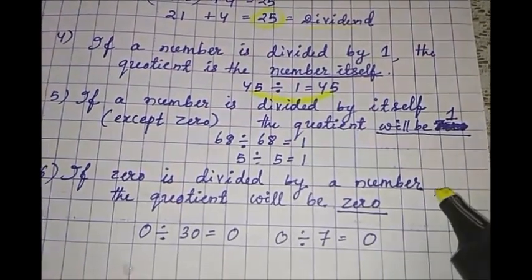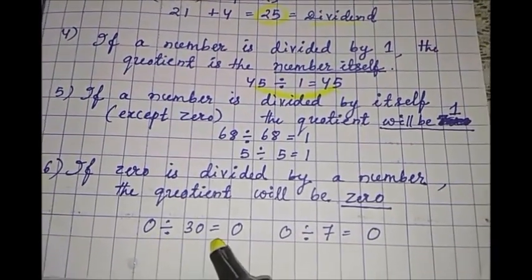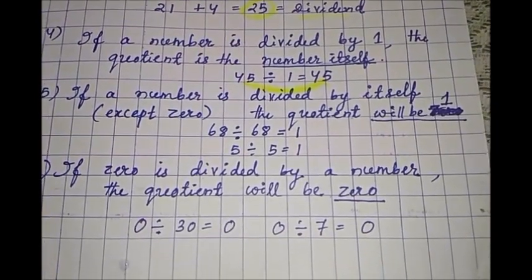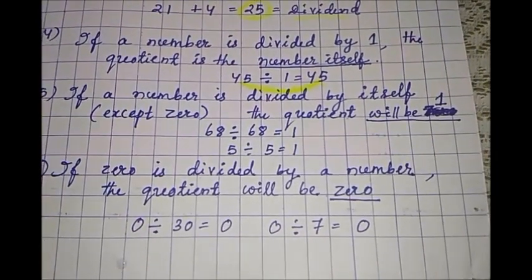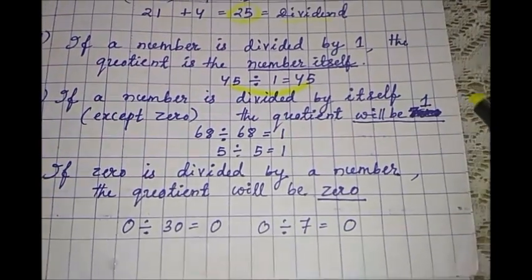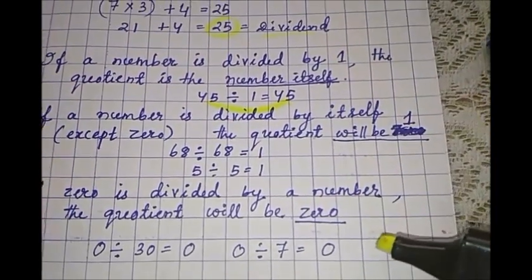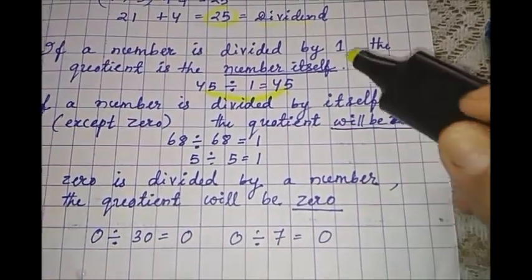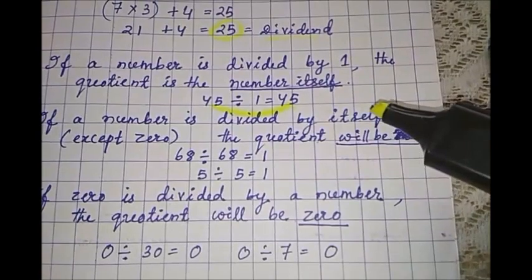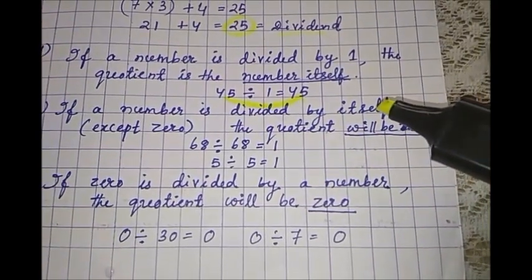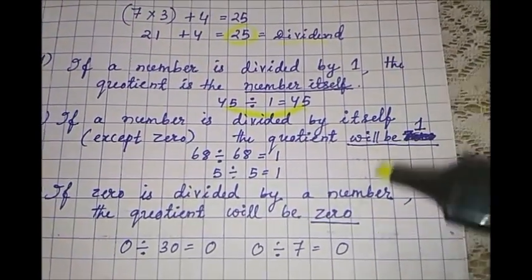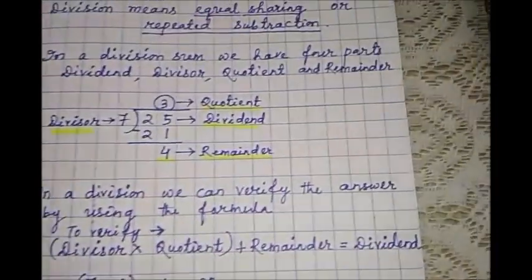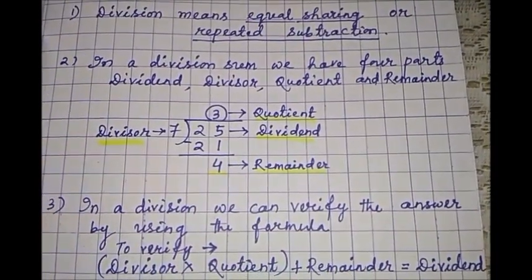Then, if 0 is divided by a number, see, 0 divided by 30 or 0 divided by 7. If 0 is divided by a number, the quotient will be 0. So these are some properties of division. And I have written here some important properties. This usually comes as your fill-ups in exams. So you should remember all these things and write all these in your maths copy.